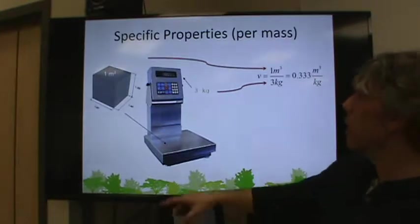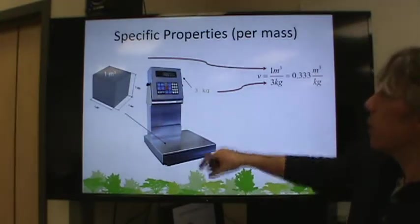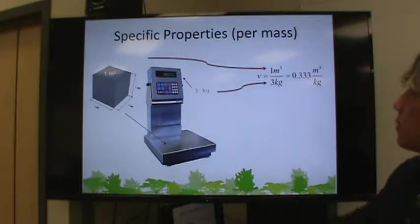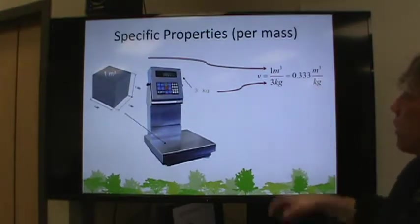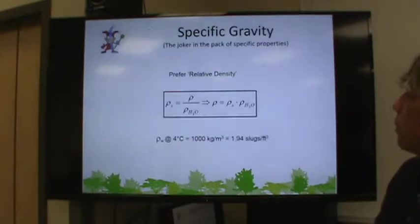cubic meters, probably foam or something. We set it on a scale and we find that it has a mass of 3 kilograms. We can simply calculate its specific volume as 1 cubic meter divided by 3 kilograms or 0.3 repeating cubic meters per kilogram.